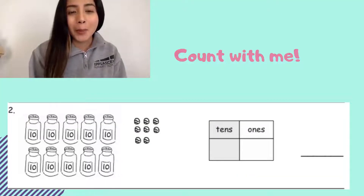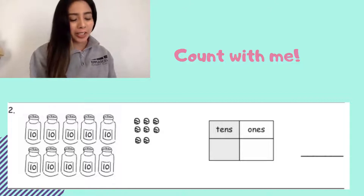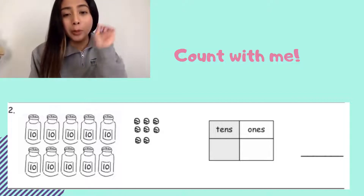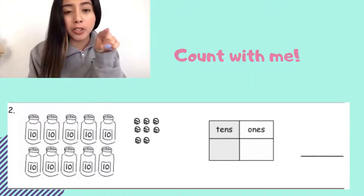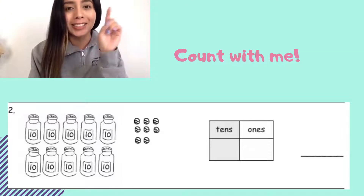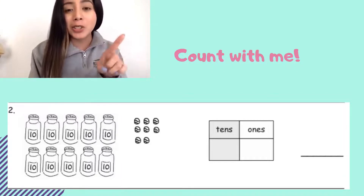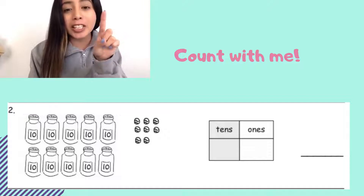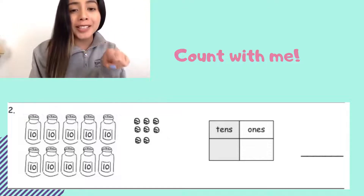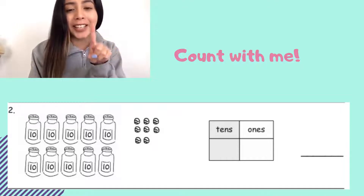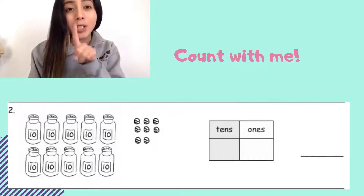It looks like we have more objects here. Let's see if we can count all of them. Just like before, point to the very first little picture that you see — the little jar — and we're going to count by 10s first. 10, 20, 30, 40, 50. Next row: 60, 70, 80, 90, 100.